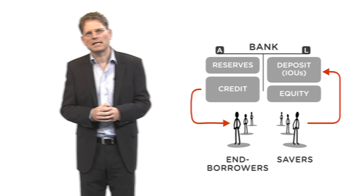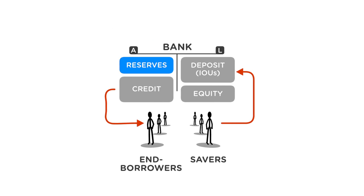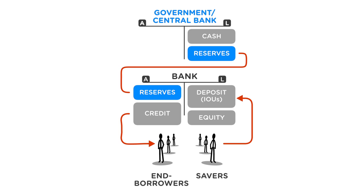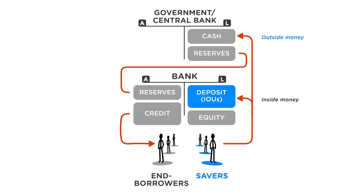Now, let's add the government with the central bank. The reserves introduced earlier on the asset side of the bank's balance sheet are provided by the government — more precisely by the central bank. Putting the picture together with the banks, we can now see that savers have the option to hold either inside money, in the form of standardized deposits and IOUs, or outside money, in the form of physical cash issued by the central bank.